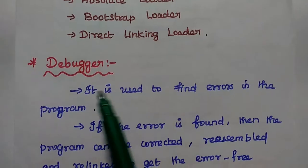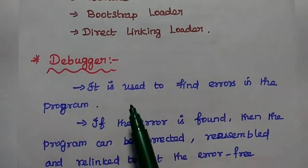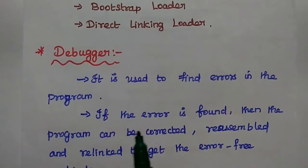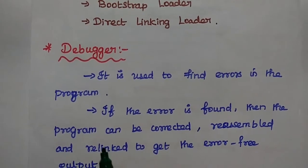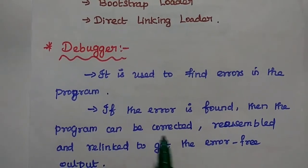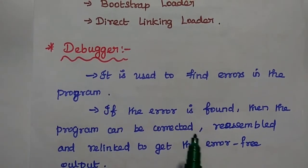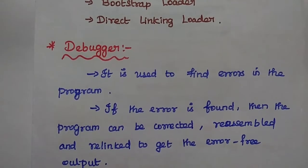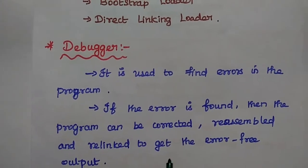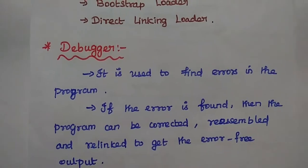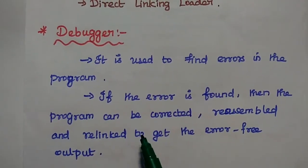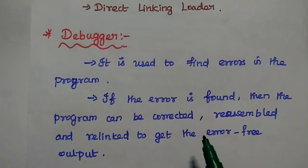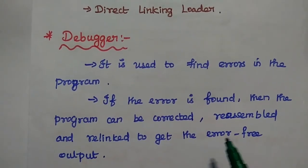The last one is the debugger. It is used to find errors in the program. If an error is found, then the program can be corrected, reassembled, and then relinked to get an error-free output. These are the steps to be followed in the assembly language process. Thank you.